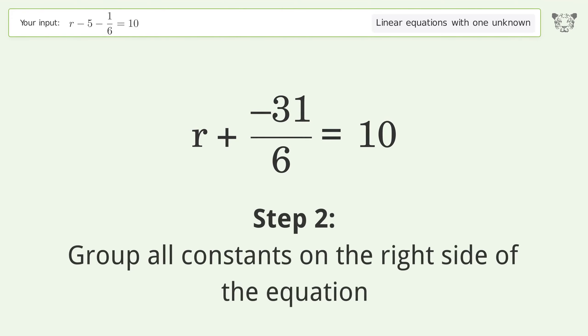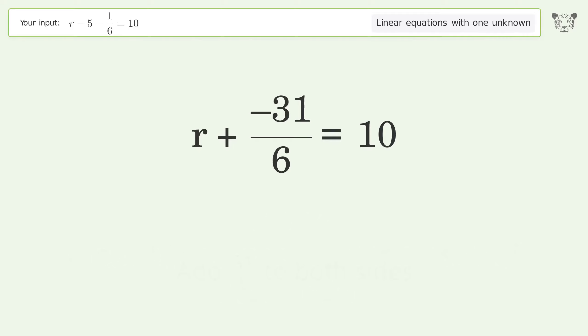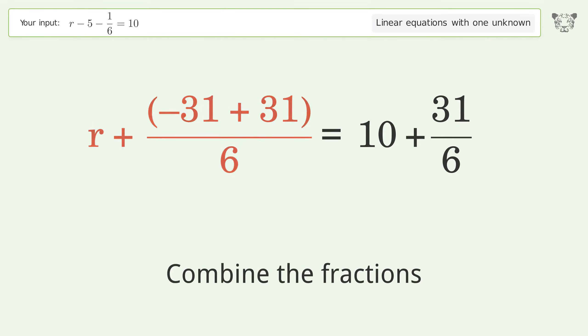Group all constants on the right side of the equation. Add 31 over 6 to both sides. Combine the fractions. Combine the numerators.